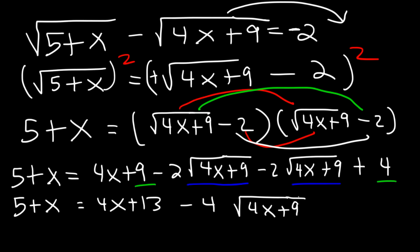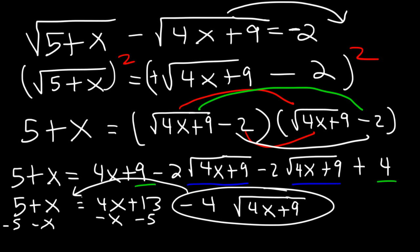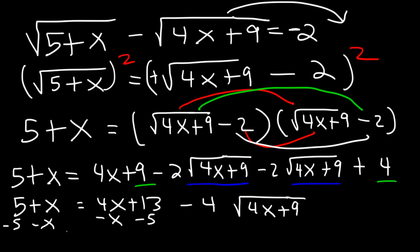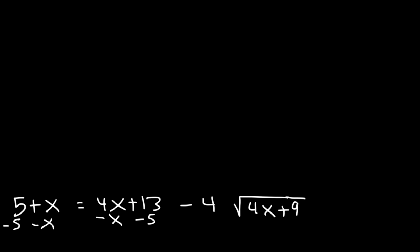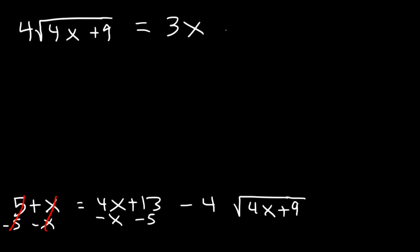Because we still have a radical, we need to get it by itself on one side of the equation. I'm going to subtract both sides by x and by 5, and move the radical term to the left side so it becomes positive. On the left we have positive 4 root 4x plus 9. On the right, 4x minus x is 3x, and 13 minus 5 is positive 8.